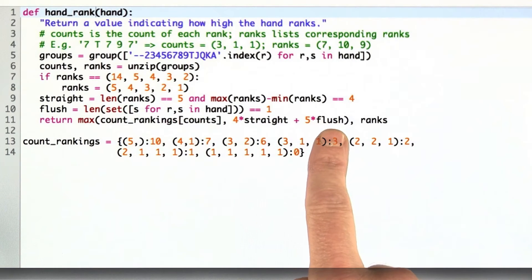If flush alone is true, that will give you a five, and that's the right ranking for flush. And if straight and flush is true, that will give you a nine.